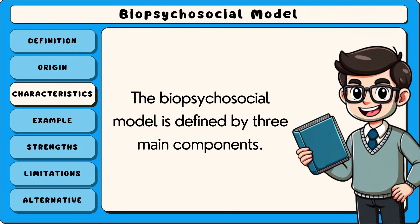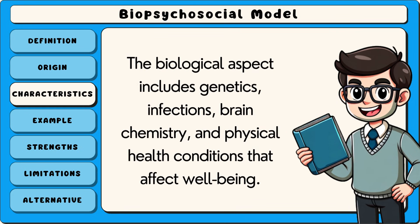The biopsychosocial model is defined by three main components. The biological aspect includes genetics, infections, brain chemistry and physical health conditions that affect well-being.